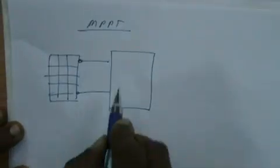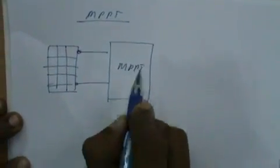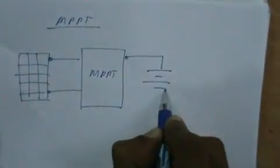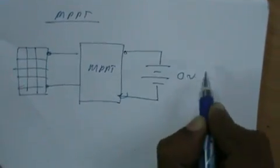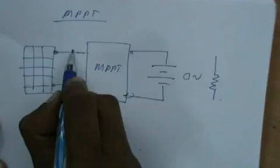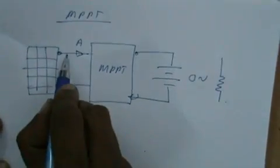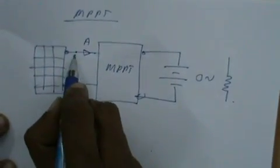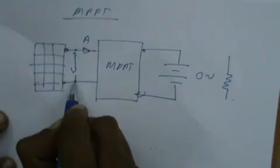Here I am going to explain the working theory of MPPT. This is the panel. The panel is connected to an MPPT, and the output of the MPPT is connected to a battery or a load. This is the panel current — this is A — and this is the panel voltage — here is V.